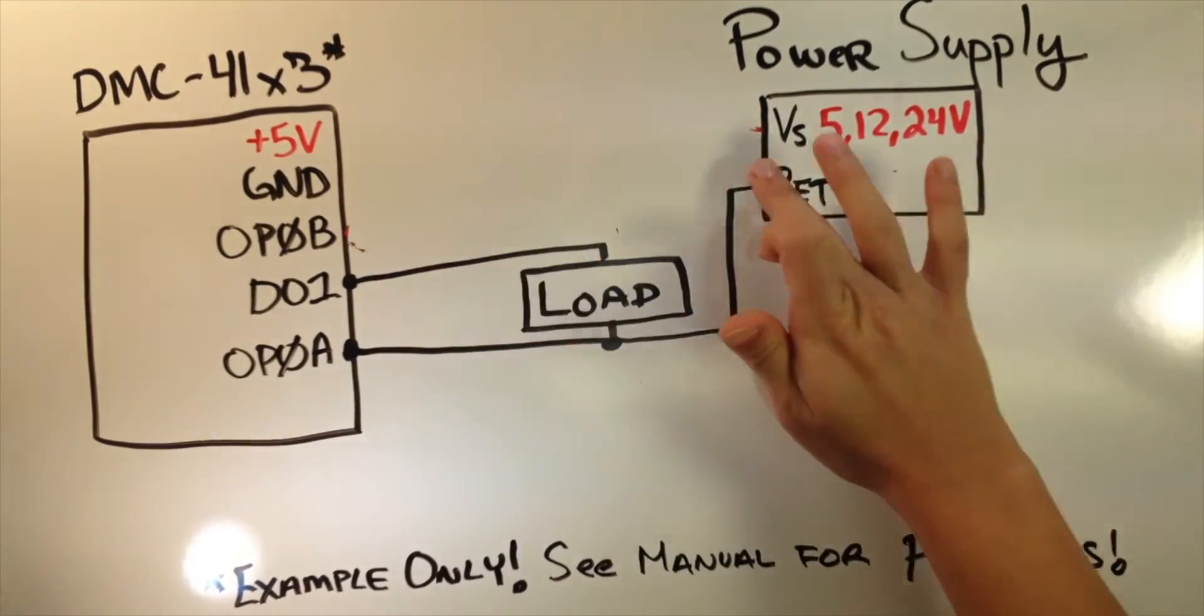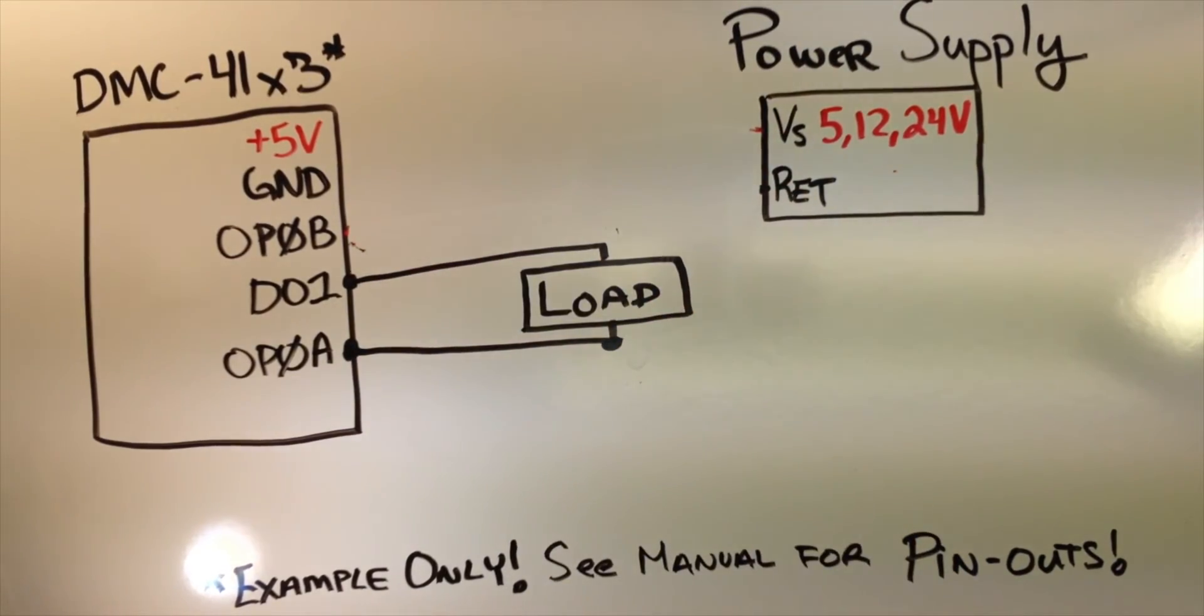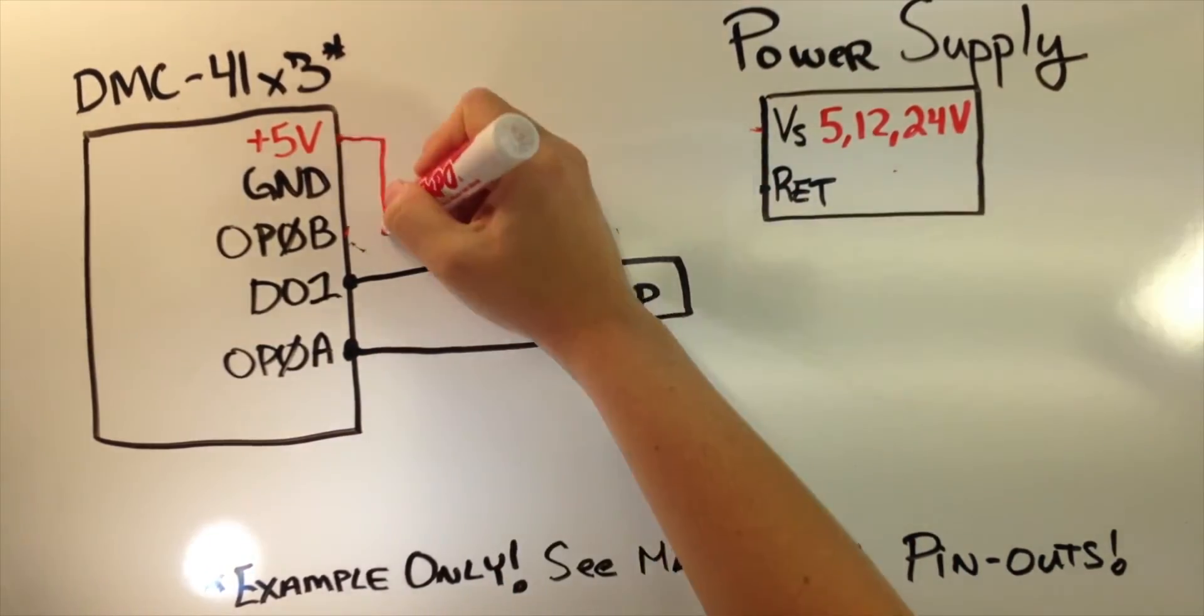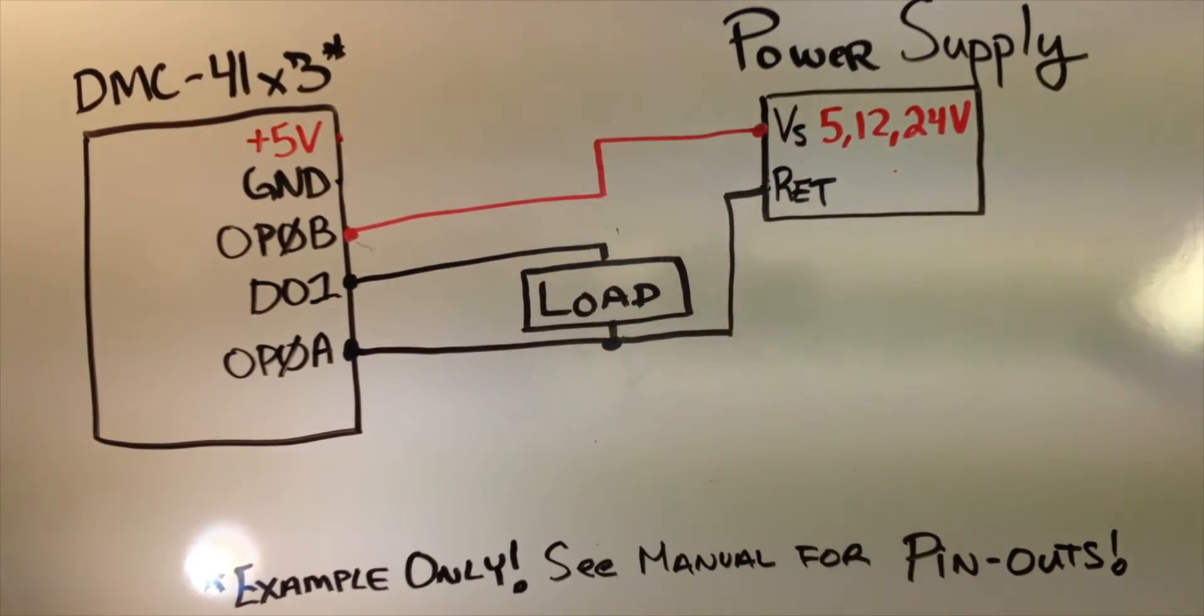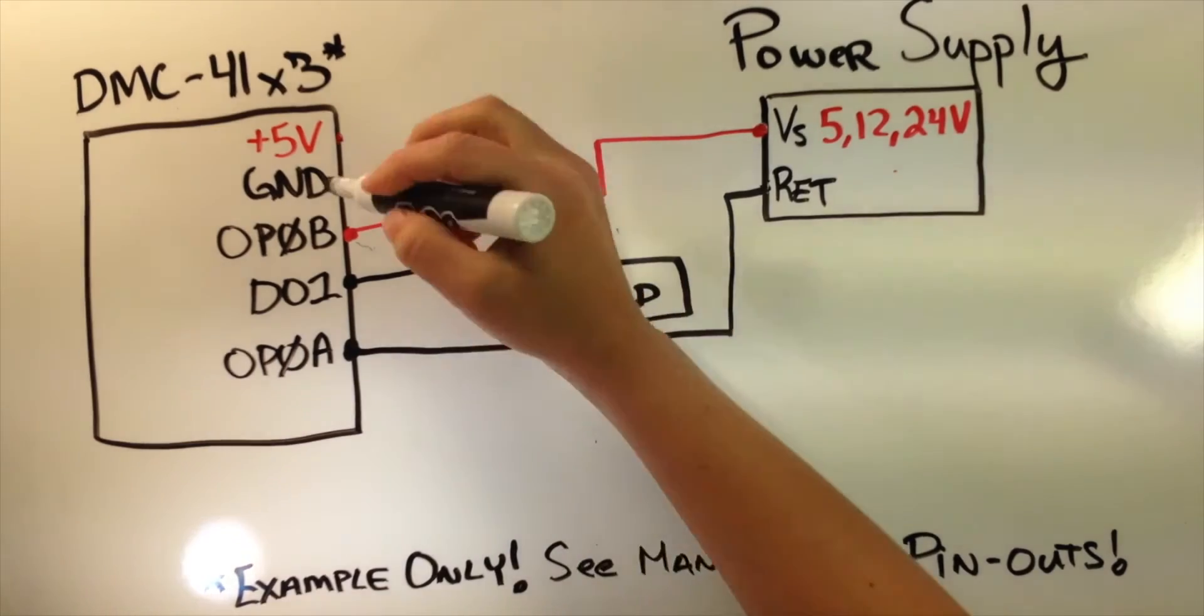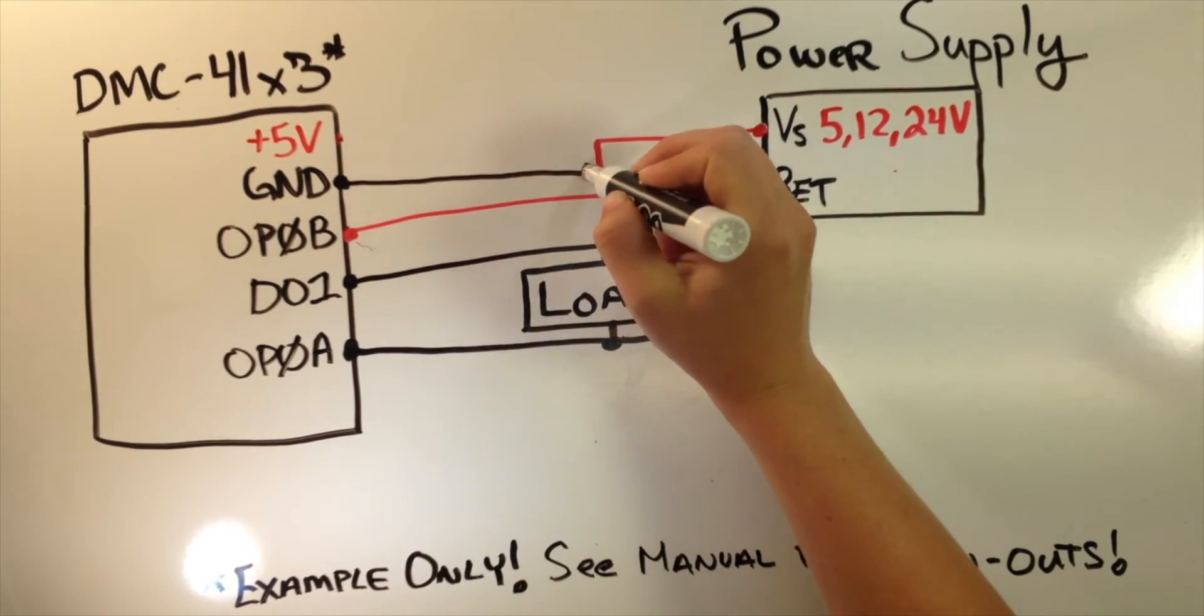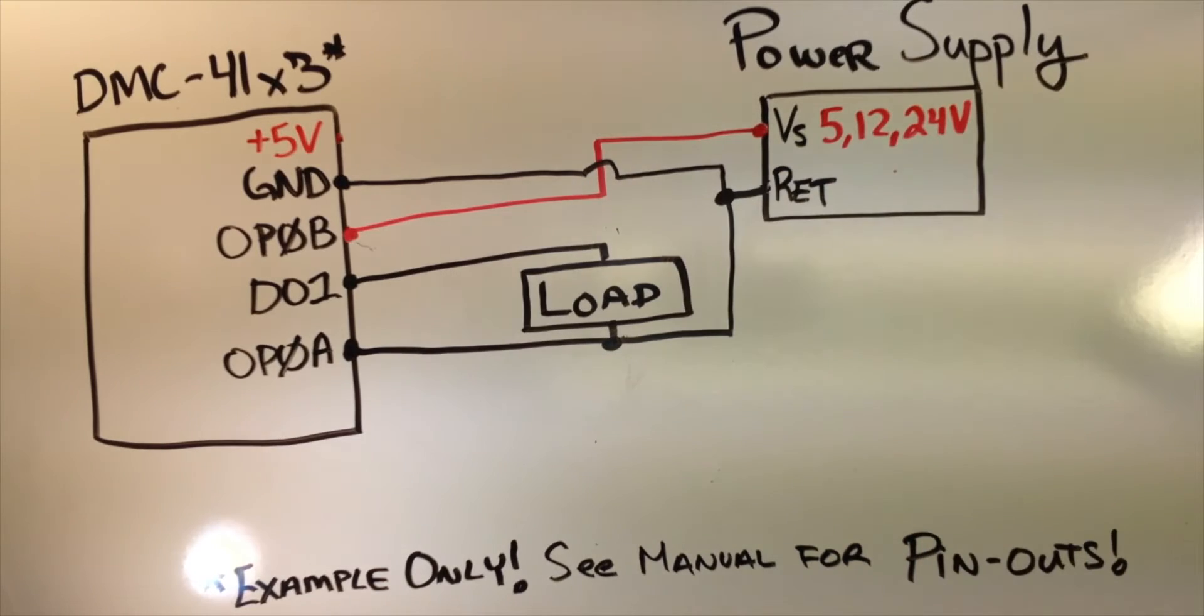Opto-isolation can also be bypassed, meaning the outputs can be powered using the plus 5 volt and the ground reference on the controller. Even with an external supply, one may inadvertently bypass opto-isolation by tying the ground of the controller with the output supply return.